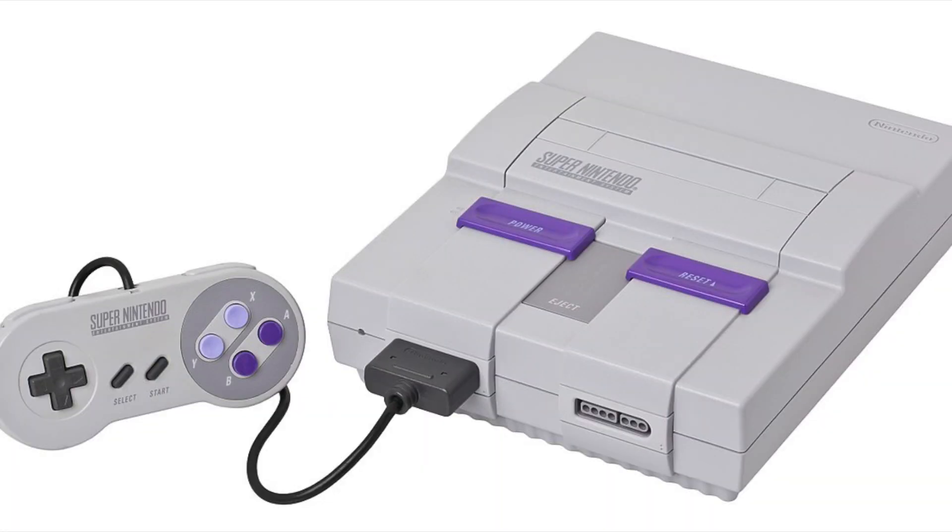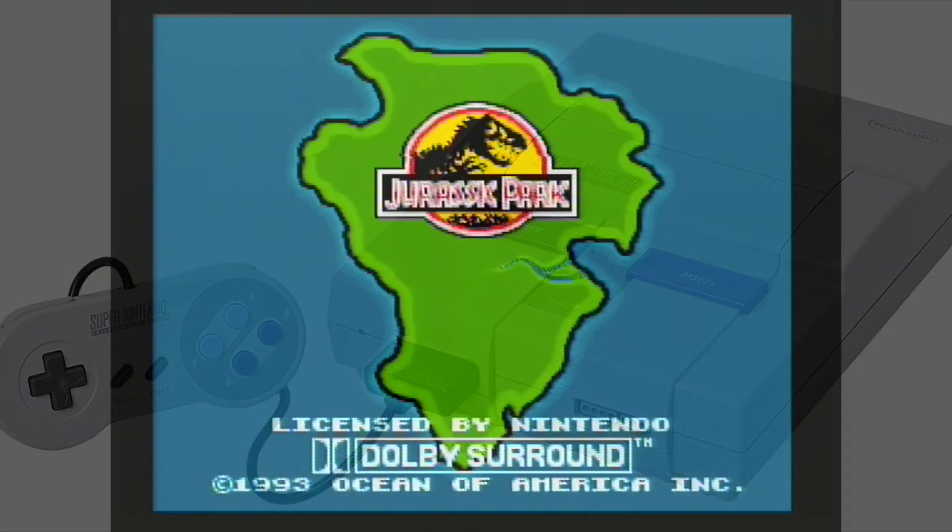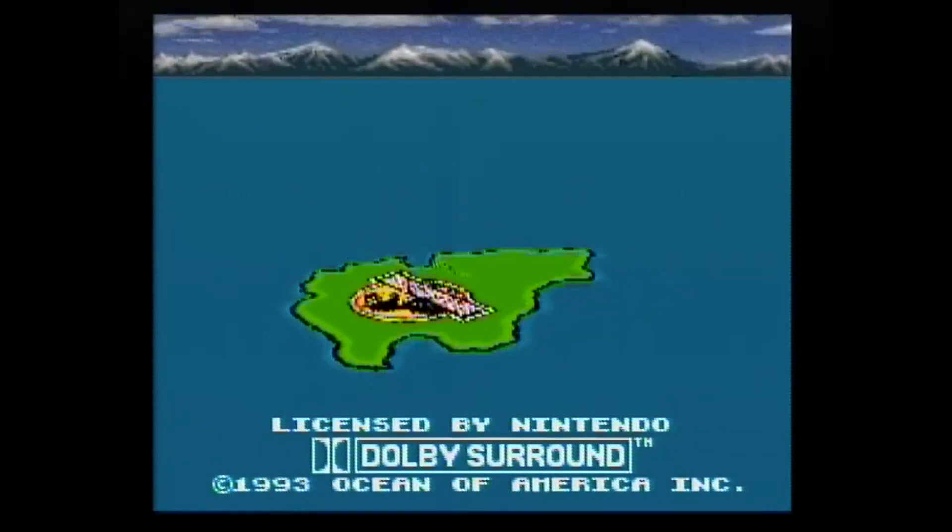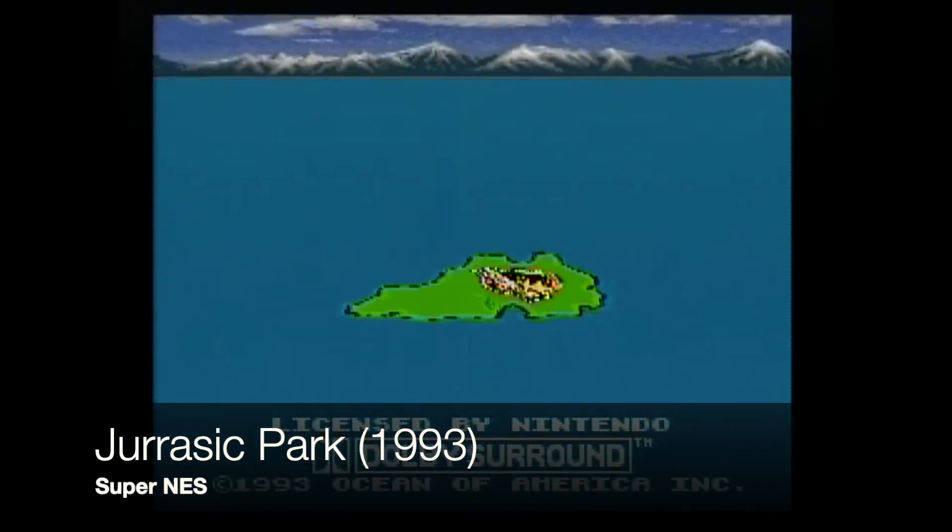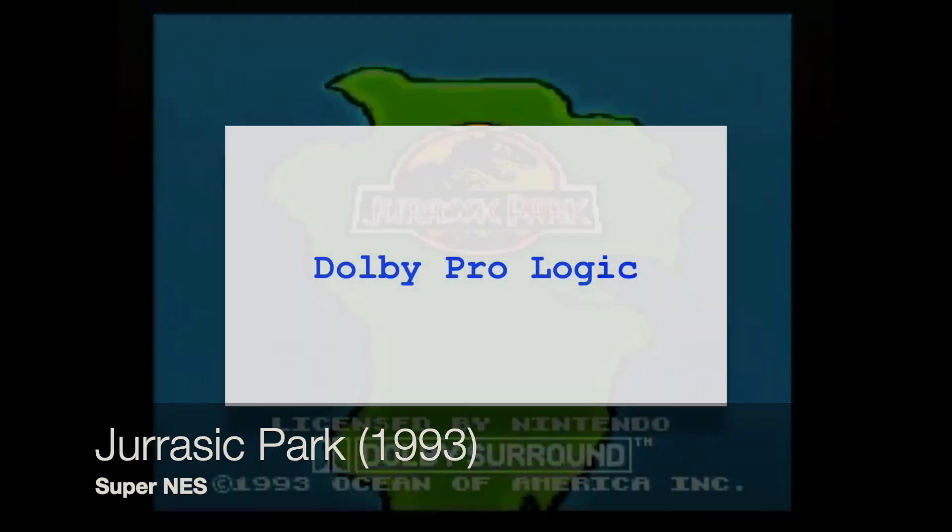Did you know though that the Super Nintendo was capable of surround? Games as early as 1993 Jurassic Park, for example, contained surround information using a technology from Dolby called Prologic, which later evolved over several iterations.